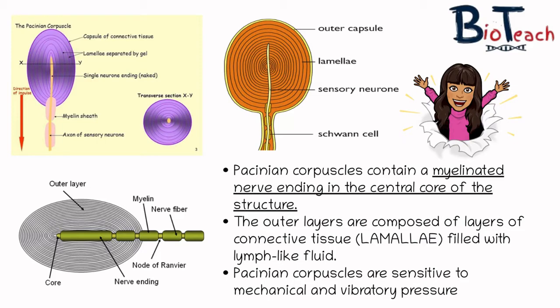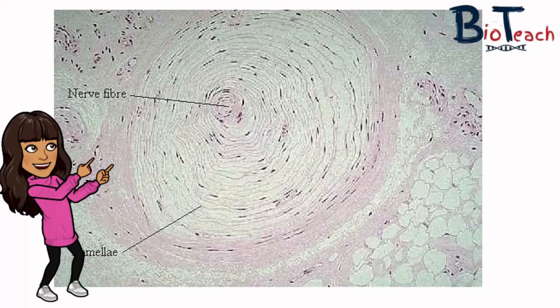They're relatively large and so you can see them under an optical microscope, but they are structurally quite simple. You have this sensory nerve ending surrounded by layers — it's a capsule of connective tissue layers known as lamellae, and in between those layers you've got this lymph-like fluid. Under the microscope it looks a little bit like this; you can probably see those layers of the capsule.